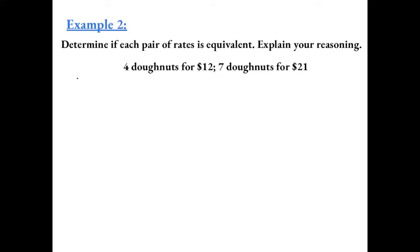Example 2. Determine if each pair of rates is equivalent. Explain your reasoning. So we could get 4 donuts for $12, or 7 donuts for $21.